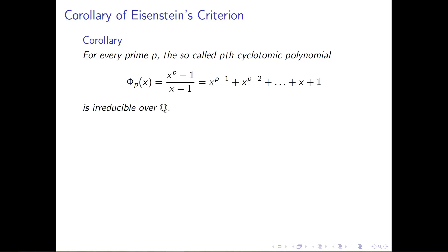Now I hope you're sitting there a little stumped, asking: how on earth can I apply Eisenstein's criterion to a polynomial that looks like this? Every single coefficient here is 1. I'm not going to have trouble with the first condition — every prime won't divide the leading coefficient — but that's exactly the problem. The leading coefficient is the same as all the other coefficients; they're all 1. How am I going to satisfy the second or third condition of Eisenstein's criterion?